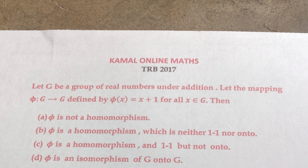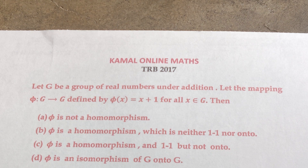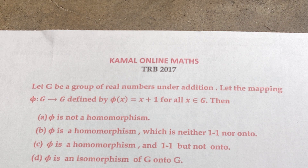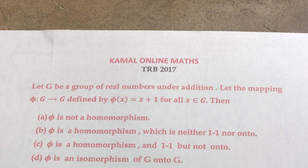Next question: Let G be a group of real numbers under addition. Let the mapping phi from G to G be defined by phi of X equals X plus 1 for all X in G. The options are: phi is not a homomorphism, phi is a homomorphism, phi is neither one-to-one, phi is one-to-one but not onto, or phi is an isomorphism of G onto G.